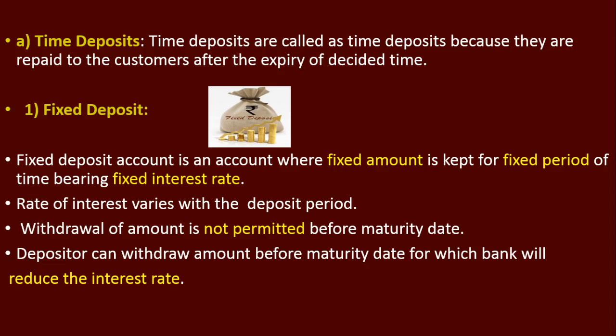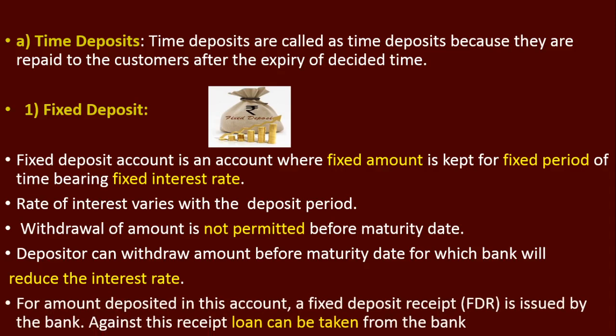It depends how long you want to keep your specific amount in the bank. Suppose you keep the amount for 1 year — the rate of interest will be different. If you keep for 5 years, the rate will change again. So the rate of interest depends on the time period. Withdrawals are not permitted before the maturity date, but if you urgently need money, the bank will reduce the interest rate and give you the money. Importantly, with your fixed deposit receipt you can also take a loan from the bank.